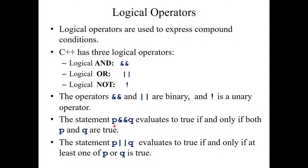If you put P && Q in parentheses, it gives true only if both conditions P and Q are true. If any condition is false, it gives zero or false. Whereas P || Q evaluates to true if any one of them is true — either P is true, Q is true, or both are true. For &&, if P is true and Q is false it gives false; both must be true to get true.